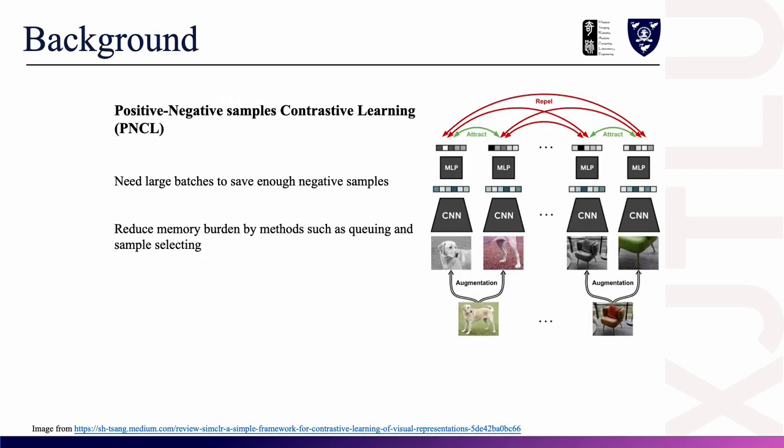I would like to start by introducing the best-known type of contrastive learning method, which I call positive-negative samples contrastive learning. The main drawback of this method is that it requires a large batch size to store enough negative samples. Otherwise, some tricks such as a feature queue or sample selection are needed to reduce the memory burden.